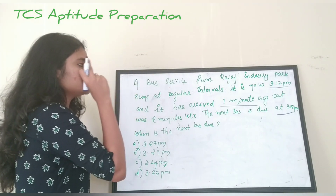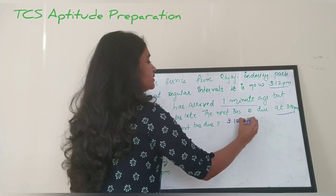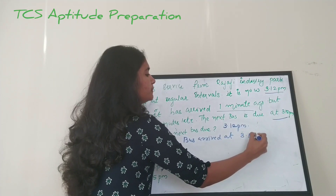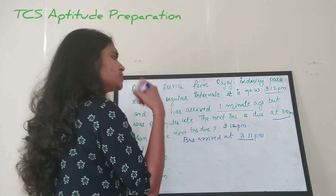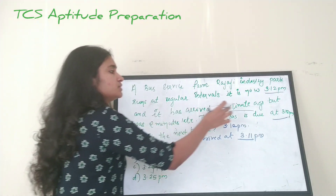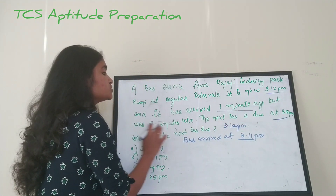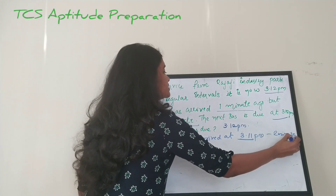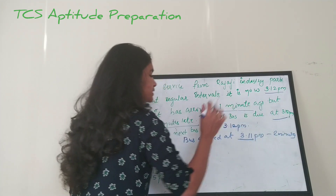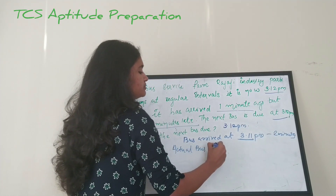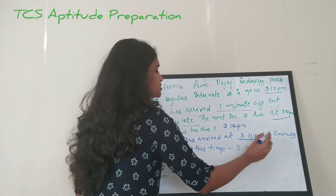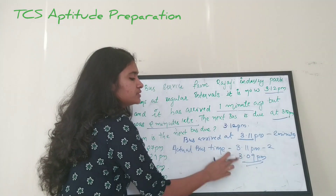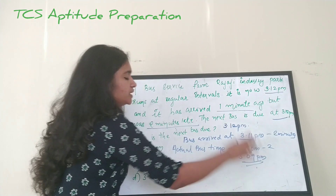It is now 3:12 PM and the bus arrived one minute ago, meaning it arrived at 3:11 PM. But the bus was two minutes late, so the actual scheduled time equals 3:11 PM minus 2 minutes, which is 3:09 PM. So the bus was actually scheduled to arrive at 3:09 PM.